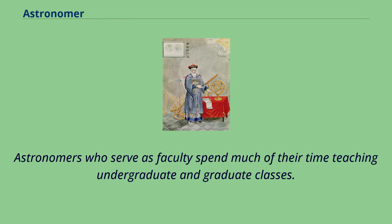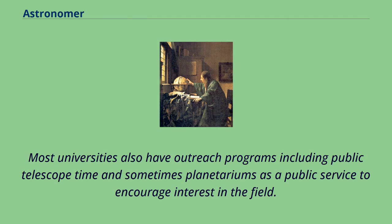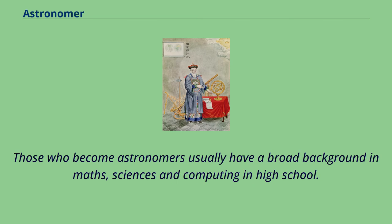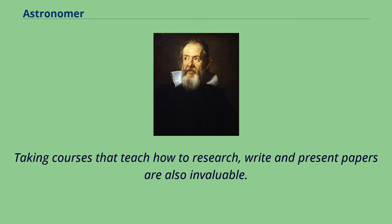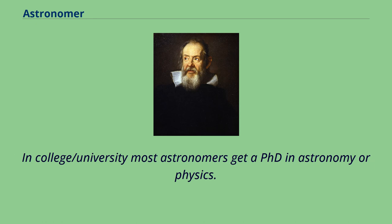Astronomers who serve as faculty spend much of their time teaching undergraduate and graduate classes. Most universities also have outreach programs including public telescope time and sometimes planetariums as a public service to encourage interest in the field. Those who become astronomers usually have a broad background in maths, sciences and computing in high school, and taking courses that teach how to research, write and present papers are also invaluable. In college or university, most astronomers get a PhD in astronomy or physics.